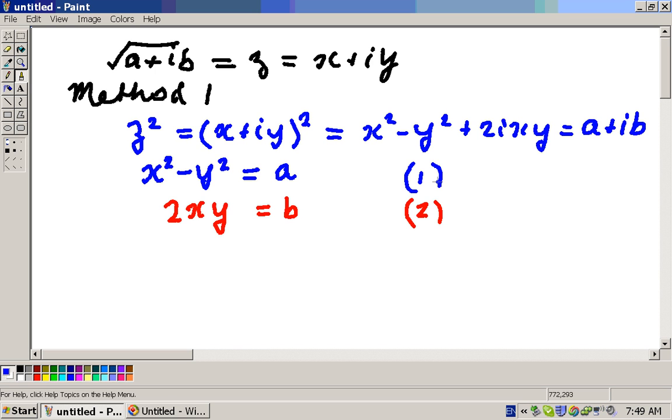So these are 2 equations for 2 unknowns. In method 1A, we also note that if Z squared is equal to A plus IB, then their modulus, or their moduli, must be equal.